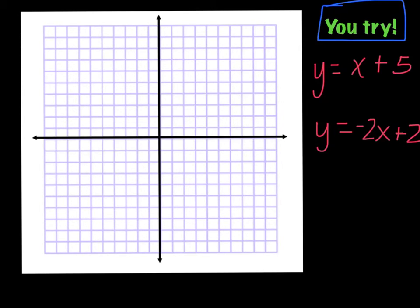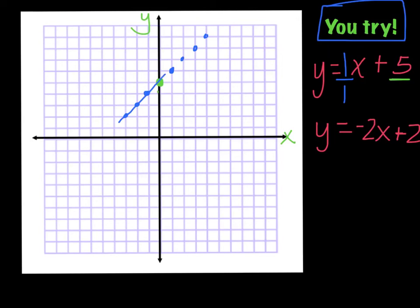The first equation is y equals x plus five. Here's my y-intercept — it's five, so I'll go up five and mark it. The slope has no number with x, so that's like a one — slope is up one over one. I'll go up one over one from that point. If I want to go back, I go down one, back one; down one, back one; down one, back one. I'll connect it for now.